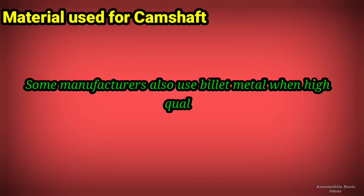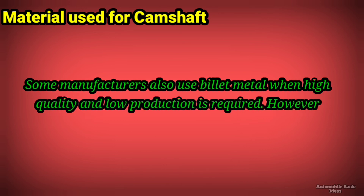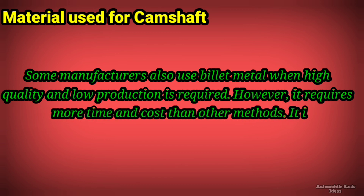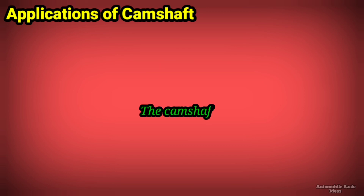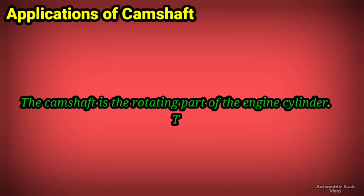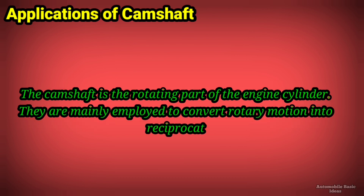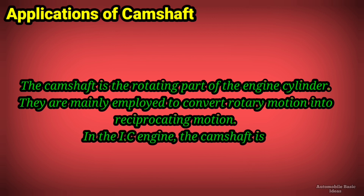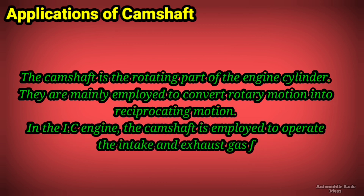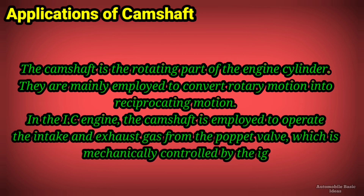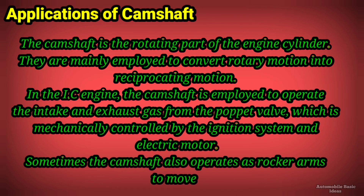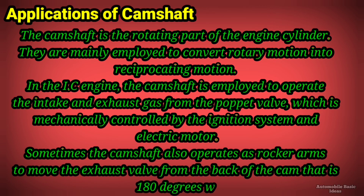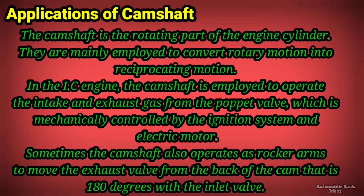Some manufacturers also use billet metal when high quality and low production volume is required; however, it requires more time and cost than other methods. Camshafts are manufactured by forging, casting, or machining on a lathe and milling machine. The camshaft is the rotating part of the engine cylinder and is mainly employed to convert rotary motion into reciprocating motion. In the IC engine, it operates the intake and exhaust poppet valves, which are mechanically controlled by the ignition system. Sometimes the camshaft also operates rocker arms to move the exhaust valve 180 degrees from the inlet valve.